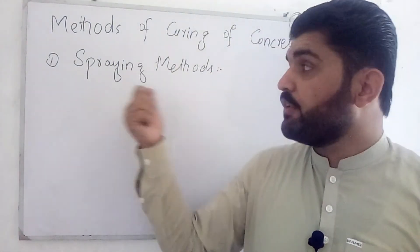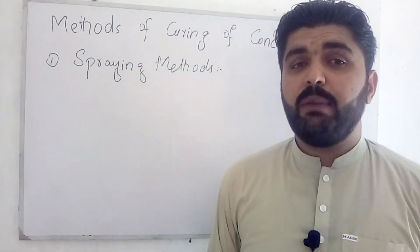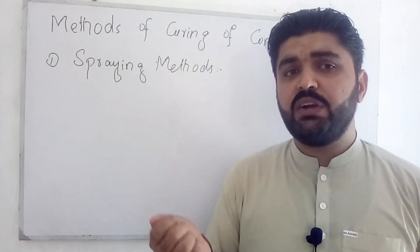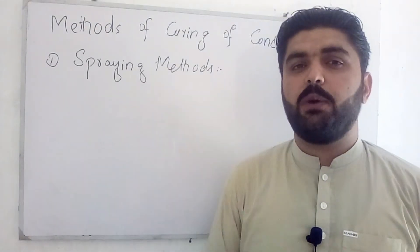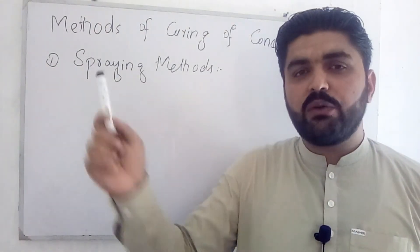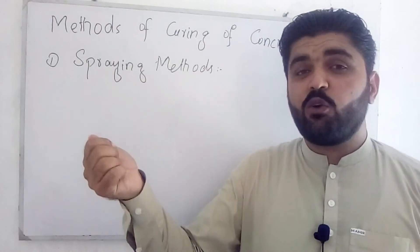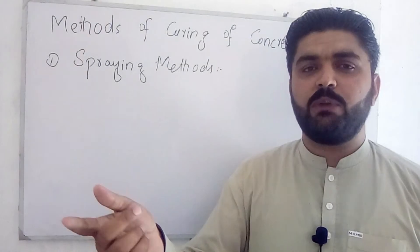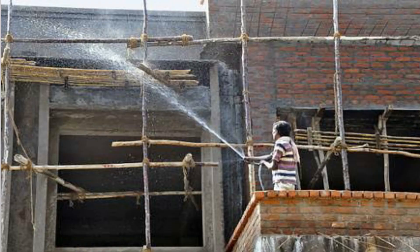The first method of curing is the spraying method. As the name represents, in this method we spray water on fresh concrete, mortar, or plaster work. For example, after completing a plaster, we spray water on the fresh surface. As you can see in the picture, the spraying method involves spraying water on fresh concrete or fresh mortar work like plaster.